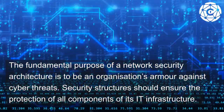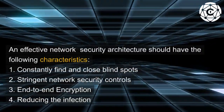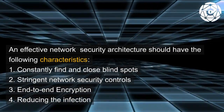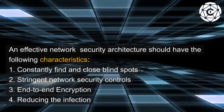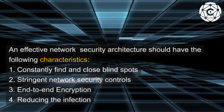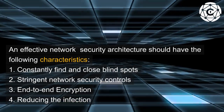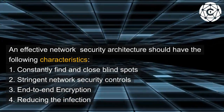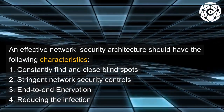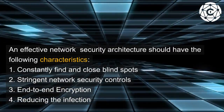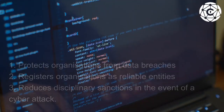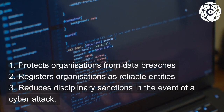An effective network security architecture should have the following characteristics: one, constantly find and close blind spots; two, stringent network security controls; and three, end-to-end encryption for reducing the attack surface.